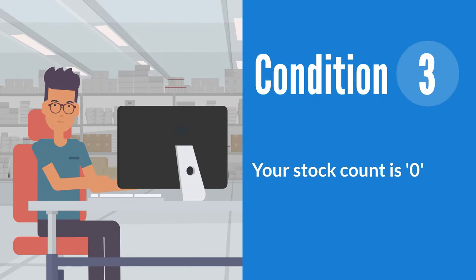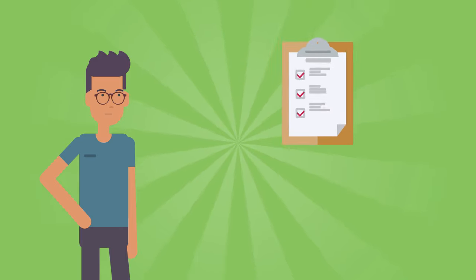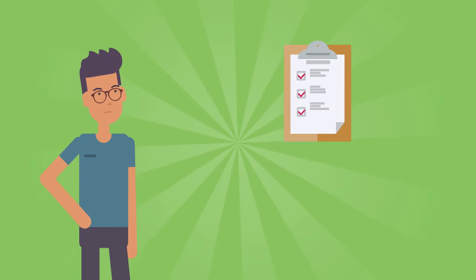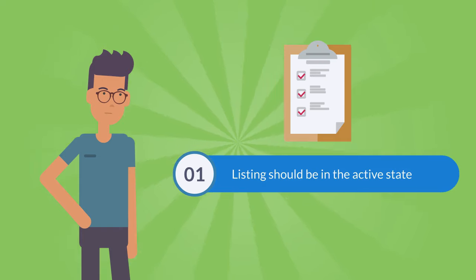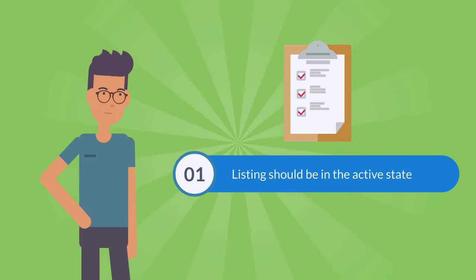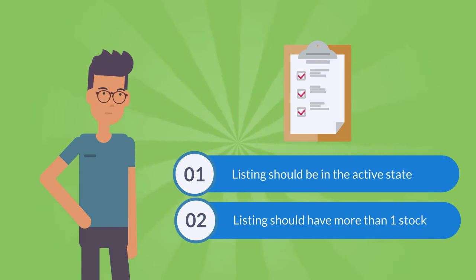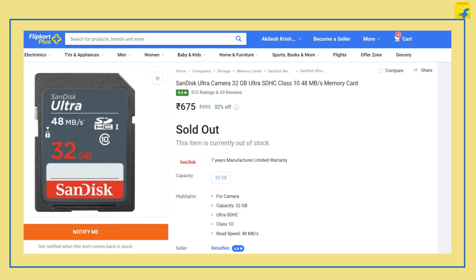The third condition is if your stock count is zero. To ensure that your product is visible on the platform, your listing should be in the active state and must have more than one stock. In case your listing does not match the required stock count, your product will reflect as out of stock on the Flipkart website.